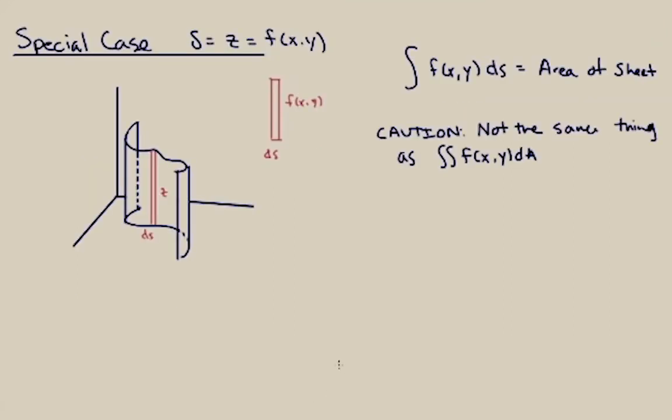So there's a special case of this that doesn't really fit with our applications to physics and engineering but sometimes helps students with their conceptual understanding. Instead of thinking of delta as being the density of a point on the path, you can also think of delta as being the height of a sort of wobbly thin sheet.